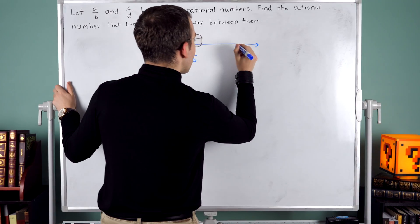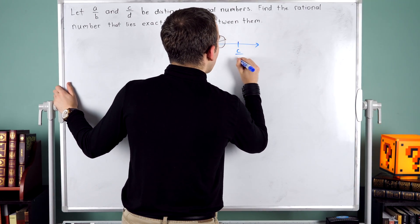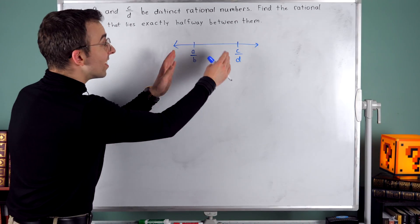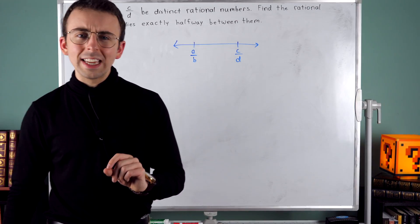So assume that A over B is the smaller one, so it's going to be over here on the left. C over D is bigger, so it's somewhere over here on the right. We're looking for the rational number that's exactly halfway between those two.